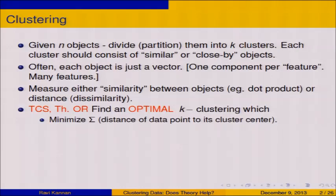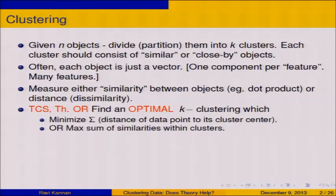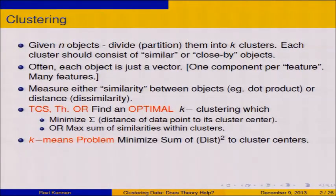To introduce part of the title: Theoretical Computer Science, or Theoretical Operations Research, focuses on finding an optimal k-clustering, an optimal division partitioned into k parts. Optimal means one of many possible things. One possibility is that you minimize the sum of the distances of each data point to its cluster center. Each data point belongs to a cluster and has a center — you measure its distance to the center and perhaps sum them up. Or you could maximize the similarities within clusters. You could have any number of these objective functions.